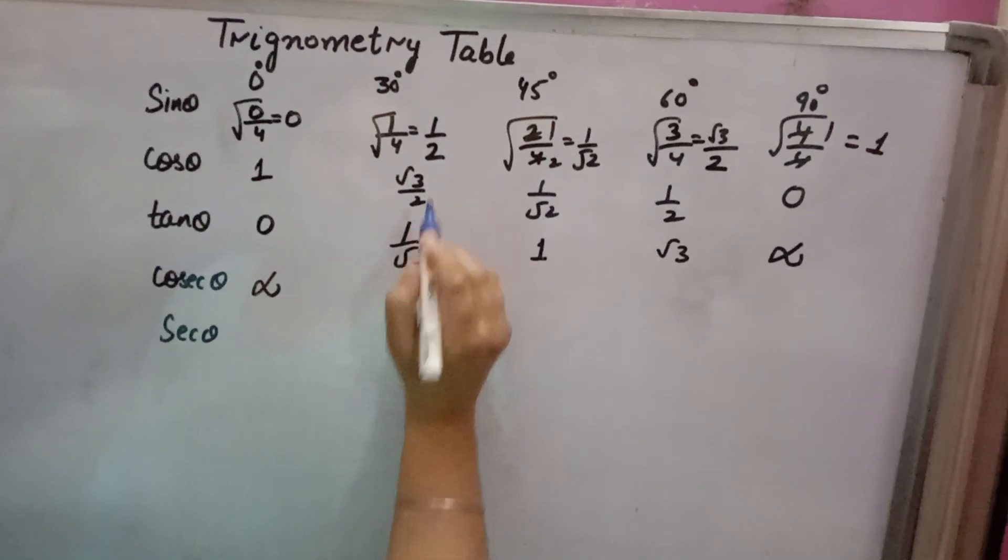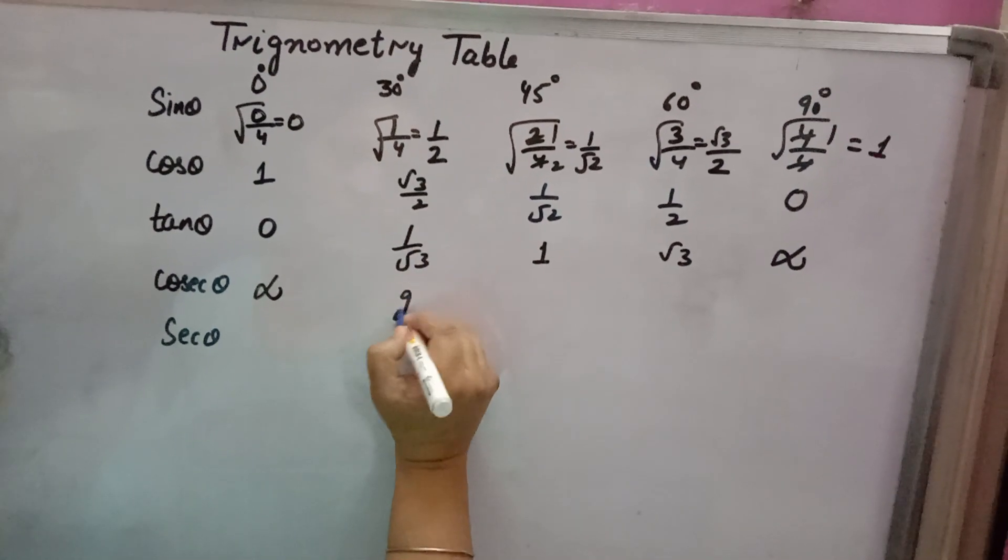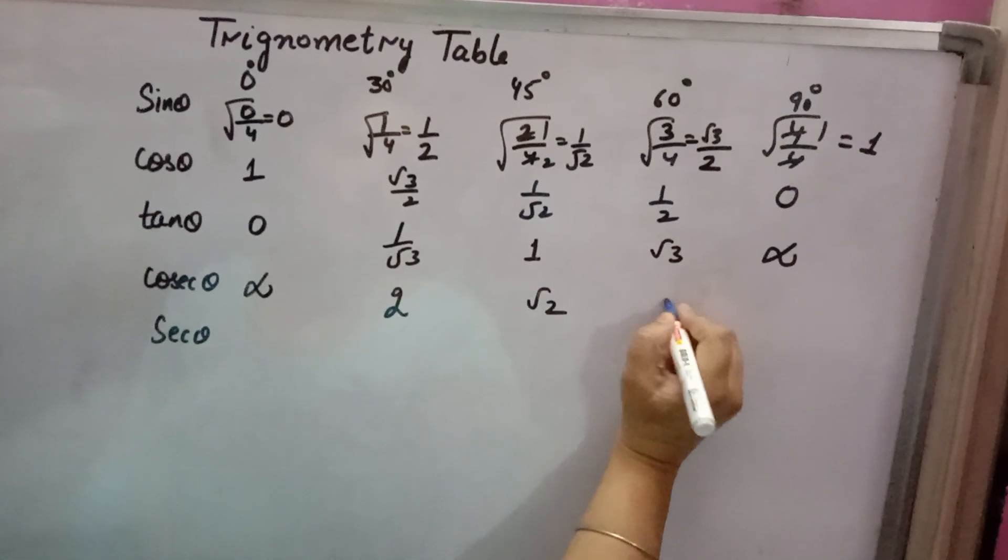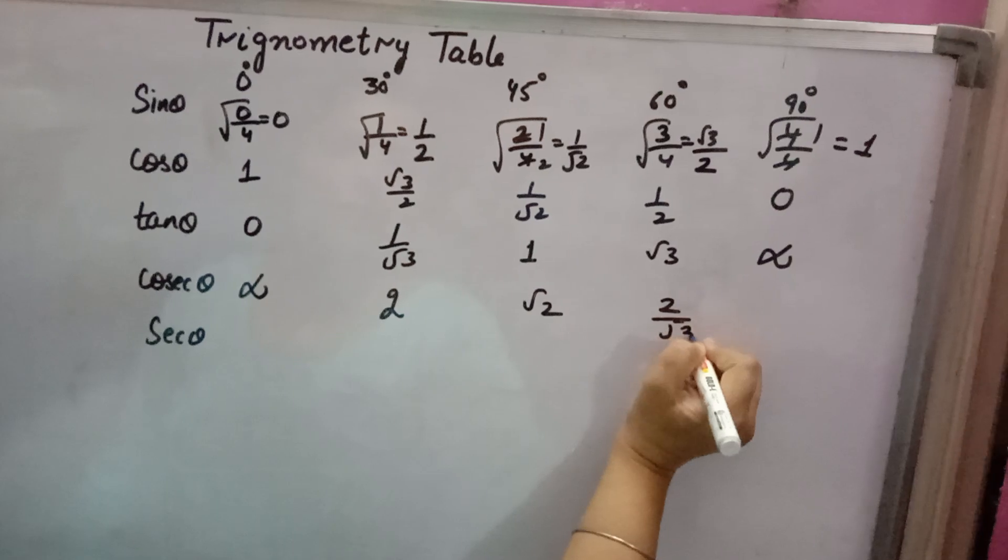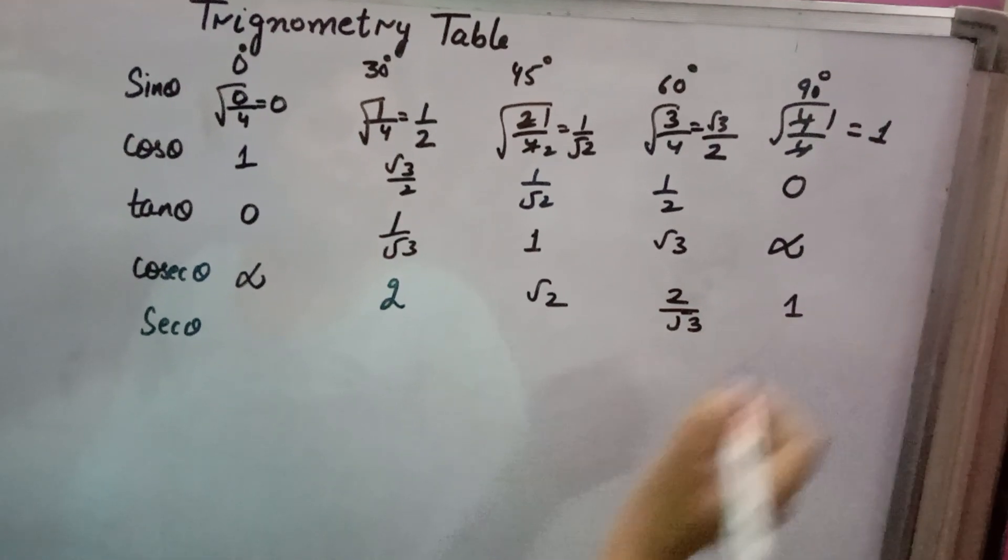Cosecant theta, reciprocal of sine: 1 over 0 is infinity. 1 over half is 2, root 2 reciprocal is 2 by root 3, and reciprocal of 1 is 1.